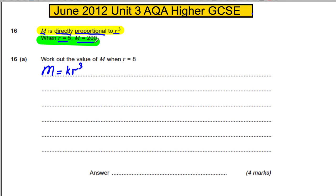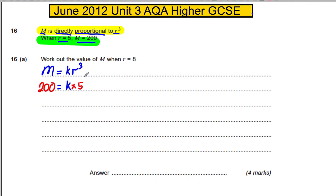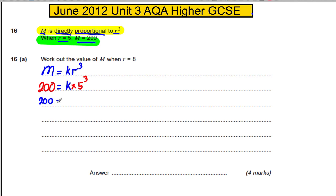We know when R is 5, M is 200, so we can substitute that in. Then 200 must be equal to K multiplied by 5 cubed. So therefore, 200 must be — if I work this out — it's 125K, and therefore K is 200 divided by 125. Tap that into your calculator. K is therefore 1.6.